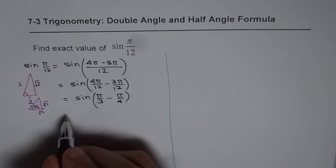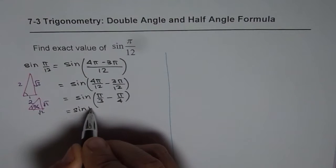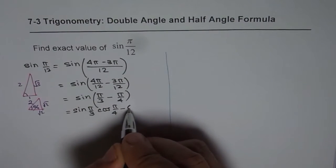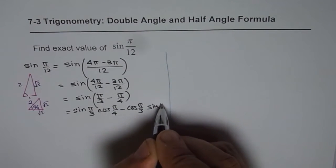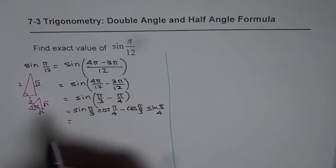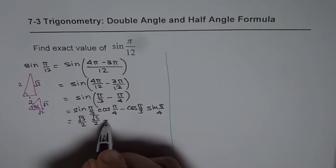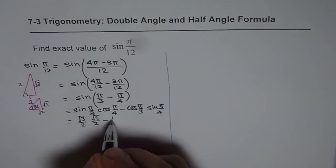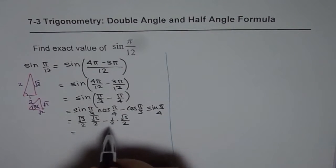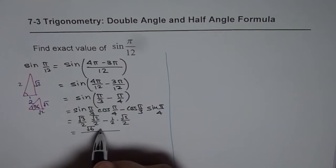So let us write down the values for sine(π/3 - π/4). First, let us expand it using the compound angle formula. We get sine(π/3)cos(π/4) minus cos(π/3)sine(π/4). Sine(π/3) is √3/2 and cos(π/4) is √2/2. Combining these, we have a common denominator of 4.